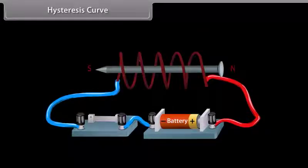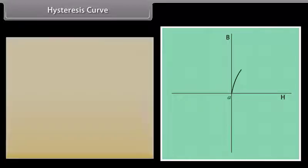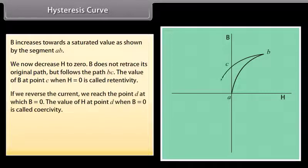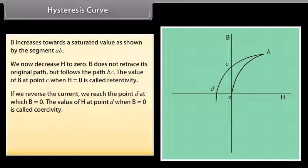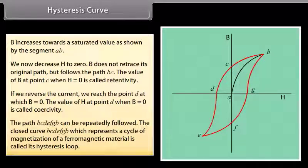Consider a ferromagnetic material inserted in a solenoid. Initially both H and B are zero. As we increase H, B increases to its saturated value along segment AB. Decreasing H to zero, B follows path BC, and the value of B at point C (when H = 0) is called retentivity. Reversing the current, we reach point D where B = 0; the value of H at this point is called coercivity. Further increasing the reversed current, B saturates in the opposite direction at E, and returning to zero at F. Increasing the current again, B returns to saturation at B. The closed curve BCDEFGB, representing a cycle of magnetization, is called the hysteresis loop.